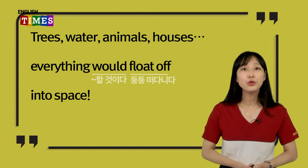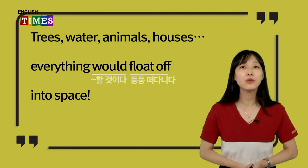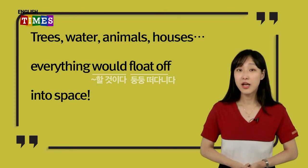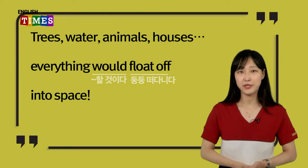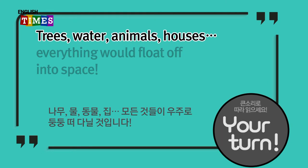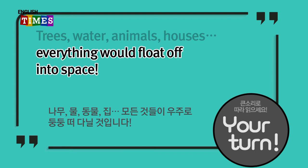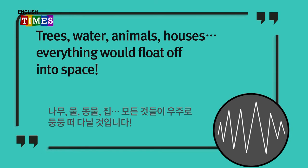나무, 물, 동물, 집들 — 이 모든 것들이 우주로 둥둥 떠다니게 될 거예요. Trees, water, animals, houses, everything would float off into space.